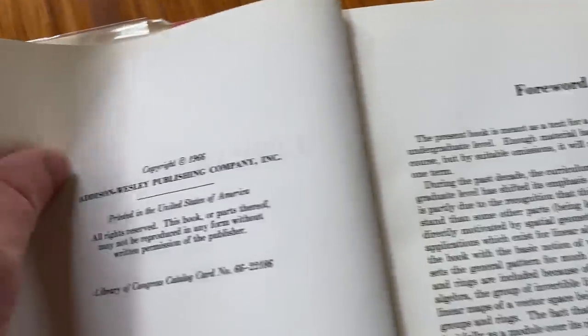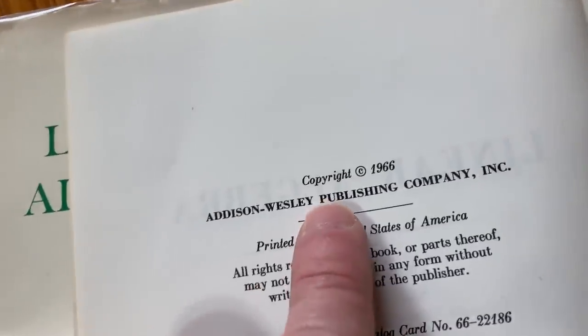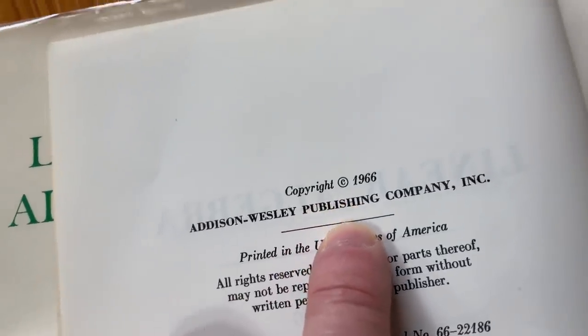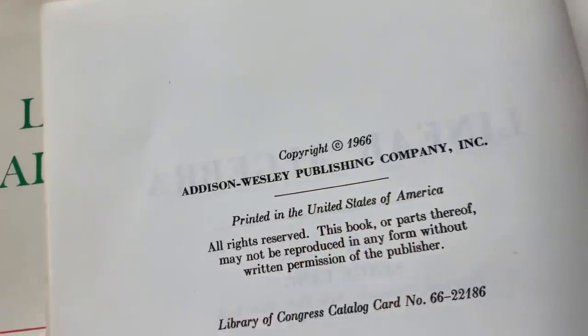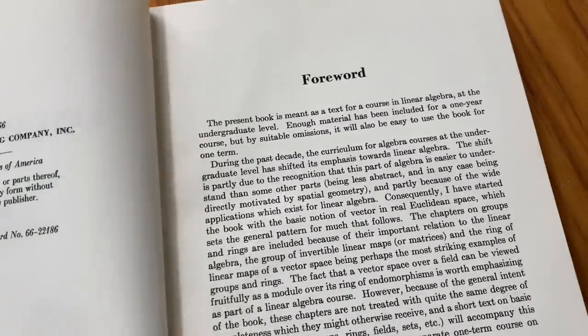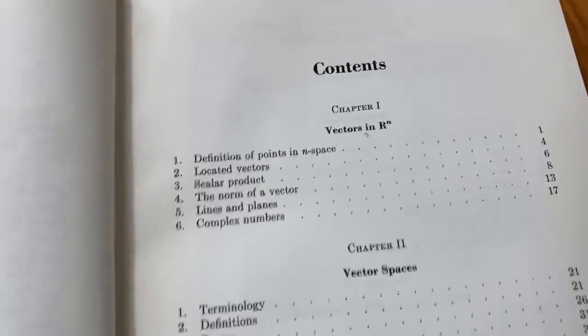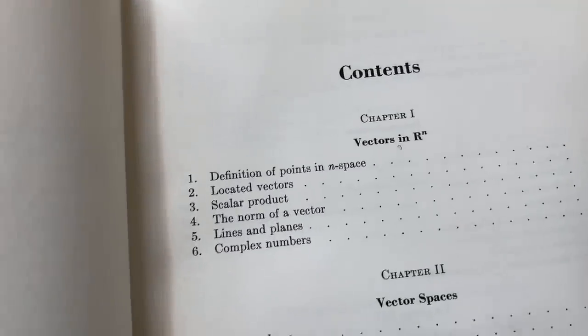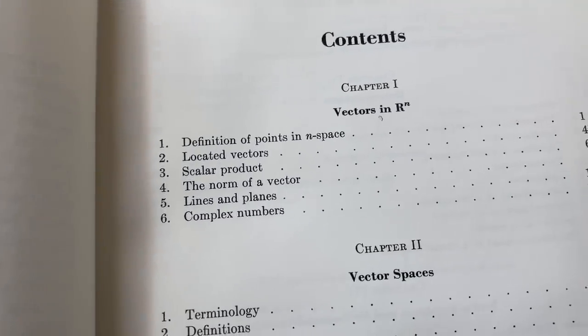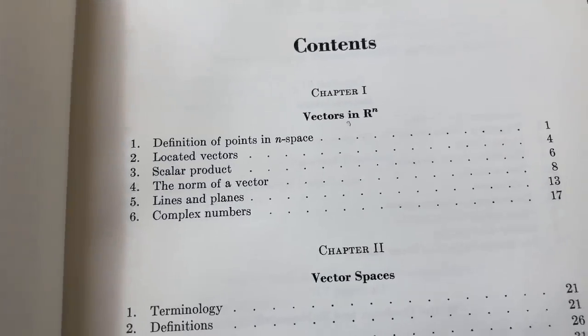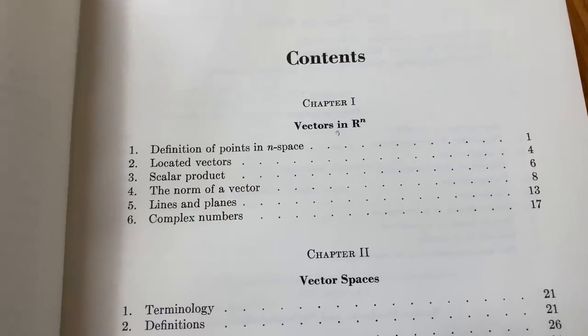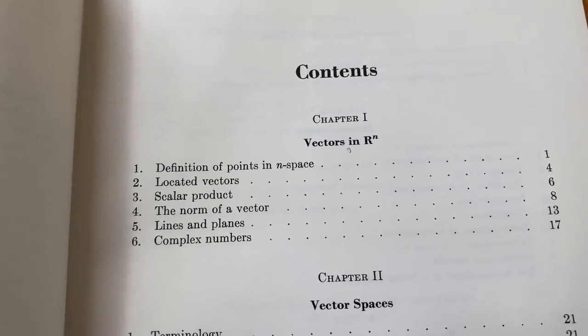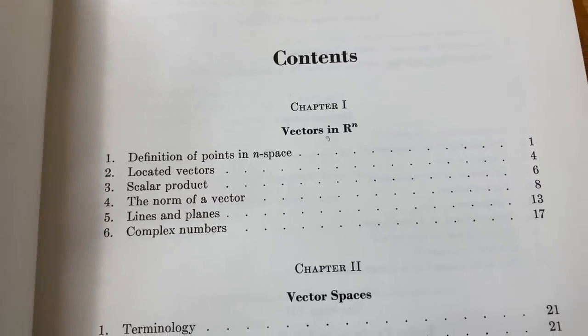Really cool. Wow. Look how old this is. Copyright 1966. That is so long ago, right? Just amazing. This copy happens to be in really good condition too. This is the table of contents, which is really quite nice because it starts with really simple math. This is math that I think most people in a calculus class or even before that could probably read and understand.